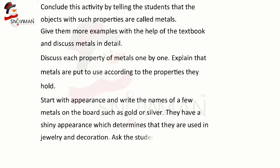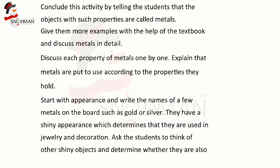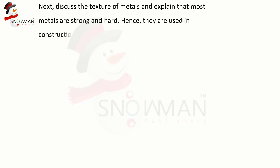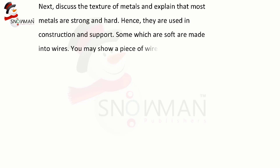Gold and silver have a shiny appearance, which determines that they are used in jewelry and decoration. Ask the students to think of other shiny objects and determine whether they are also metals. Next, discuss the texture of metals and explain that most metals are strong and hard, hence they are used in construction and support. Some metals which are soft are made into wires. Show a piece of wire in the class and ask the students to examine it according to the properties they've learned.